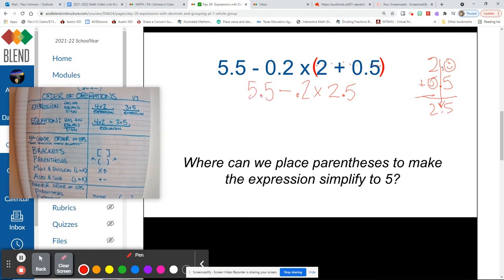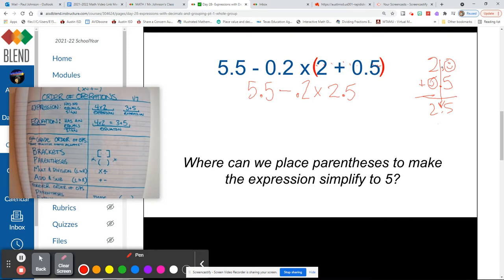So 0.2 times 2 and 5 tenths. 2 times 5 is 10, carry the 1. 2 times 2 is 4, plus 1 is 5.